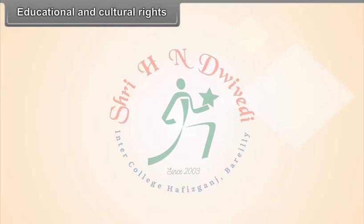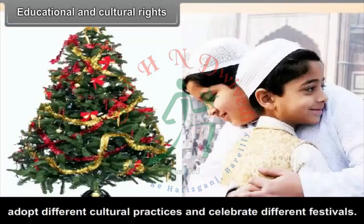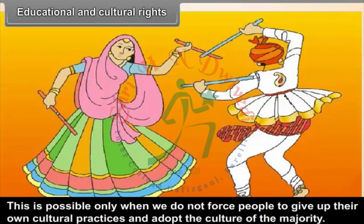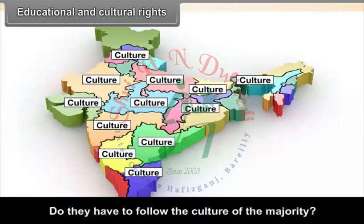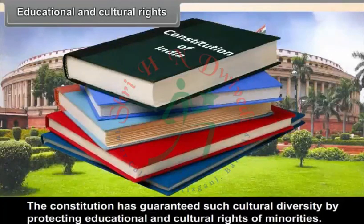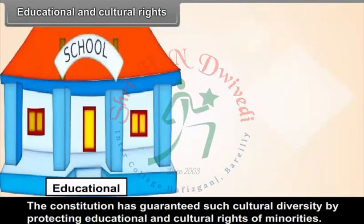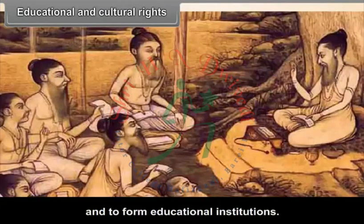Educational and cultural rights. India is full of diversity. People speak different languages, follow different religions, adopt different cultural practices and celebrate different festivals. This is possible only when we do not force people to give up their own cultural practices and adopt the culture of the majority. Freedom means that minorities should be free to adopt and practice their own culture. The Constitution has guaranteed such cultural diversity by protecting the educational and cultural rights of minorities, giving them the right to protect their culture and form educational institutions.